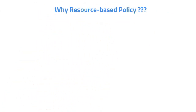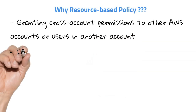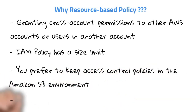Now let's talk about when you should use resource-based policies to restrict access to your S3 bucket. First of all, without utilizing IAM roles, you must provide cross-account authorizations to other AWS accounts or users located in different accounts. Secondly, IAM policy has a size limit, so if you're worried about the size of your IAM policy, you can go with resource-based policies for your S3 buckets. You can also use resource-based policies if you want to maintain and keep your access policies within the Amazon S3 environment.